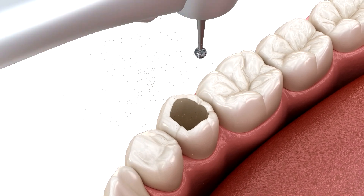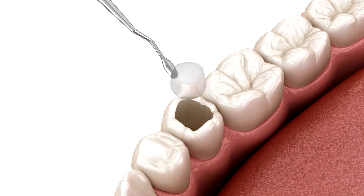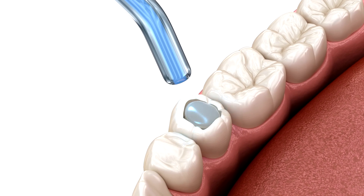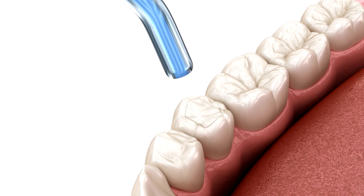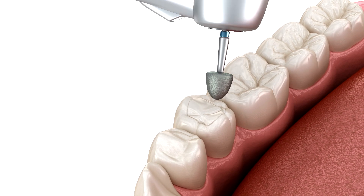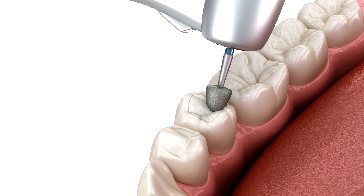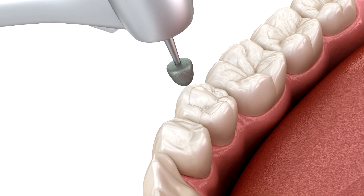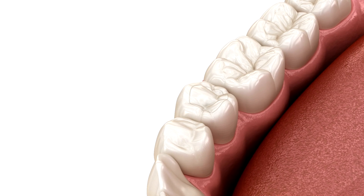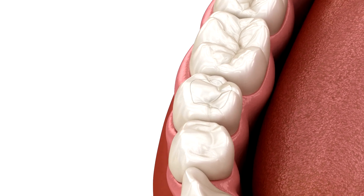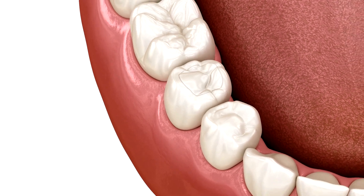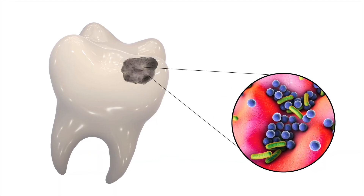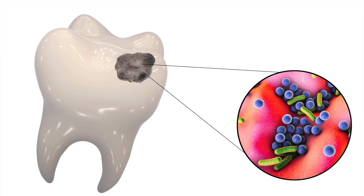In advanced cases, the decay reaches the pulp, the innermost part of the tooth containing nerves and blood vessels. This can lead to severe tooth pain, infection, and abscess formation. Recognizing the symptoms of caries early is essential. Common signs include toothache, sensitivity to temperature or sweets, visible holes or pits in teeth, brown or black staining, and bad breath. If you experience persistent tooth pain or swelling, it is important to seek dental care as soon as possible.